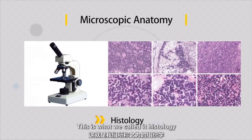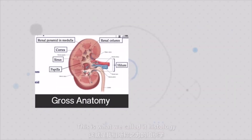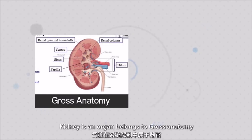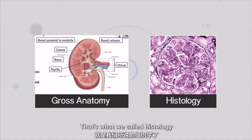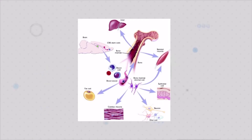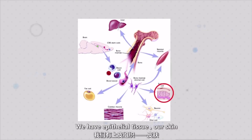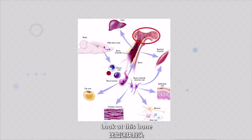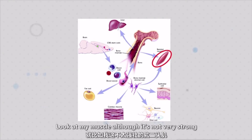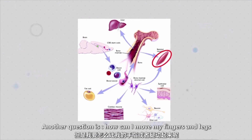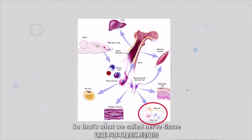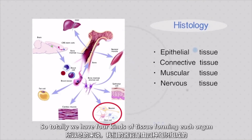We also study tissues, which we call histology — small things. For example, we know the kidney — that's gross anatomy. But when we look inside the kidney at which structures filter the water, that's what we call histology, because we study the tissue inside the kidney. There are four types of tissues: epithelial tissue — look at our skin; connective tissue; muscular tissue — my muscle moves my finger and my leg; and nerve tissue. So totally we have four kinds of tissues, which form each organ.